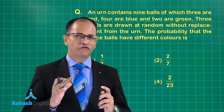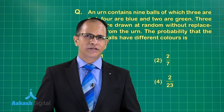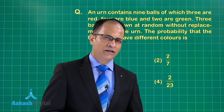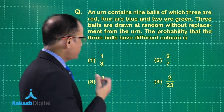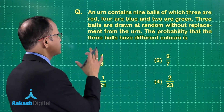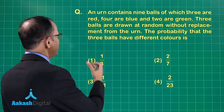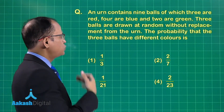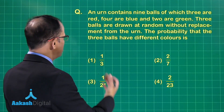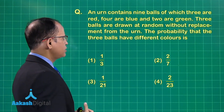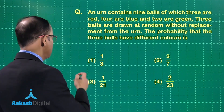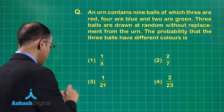Let us talk about a few problems based on the concepts we have done till now. The first problem is a simple one: we have an urn containing nine balls, of which three are red, four are blue, and two are green. Three balls are drawn at random without replacement from the urn. The probability that the three balls have different colors is what we need to find.